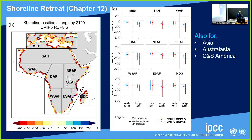For shoreline retreat, we have figures showing projected retreat subject to the caveats I mentioned. This is for Africa by 2100 under RCP8.5. Negative values indicate erosion and positive values indicate accretion. Dark red means more than 100 meters of retreat. We also have uncertainty ranges for each region. We have produced similar figures for Asia, Australasia, and Central and South America, but we don't have a global map.